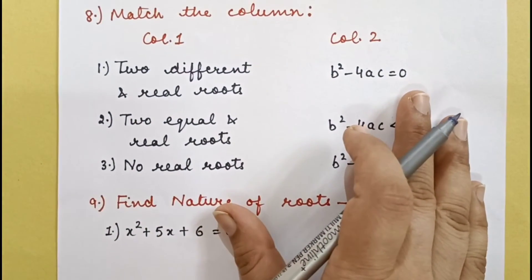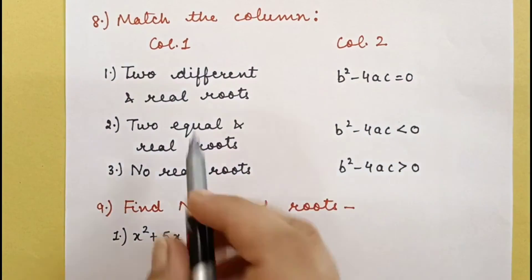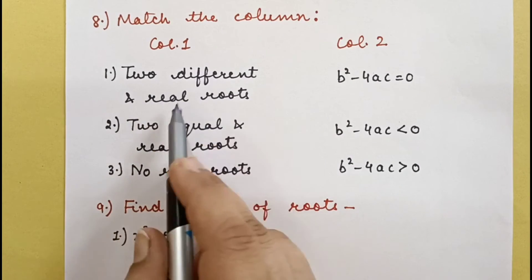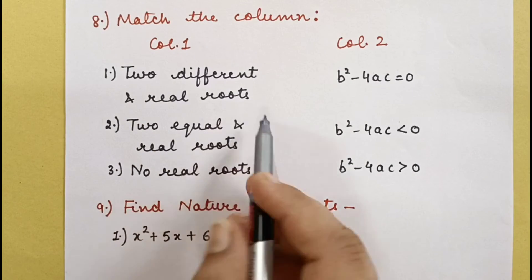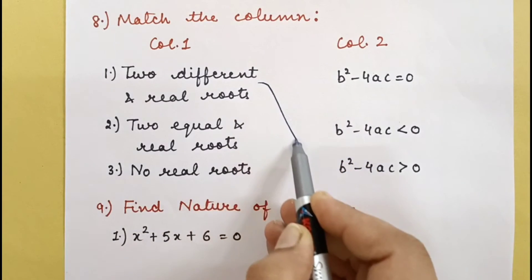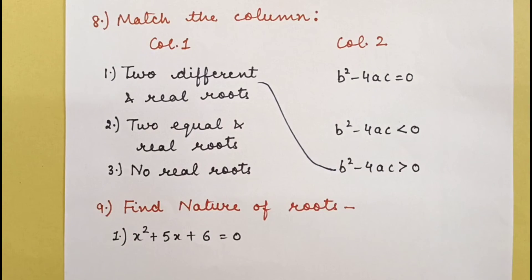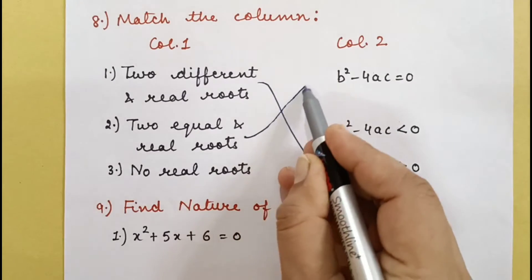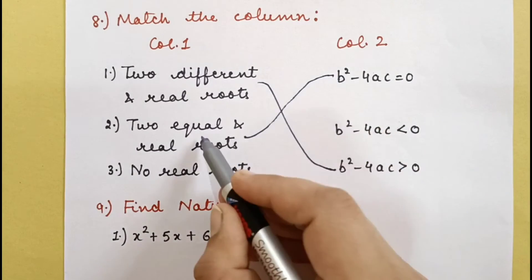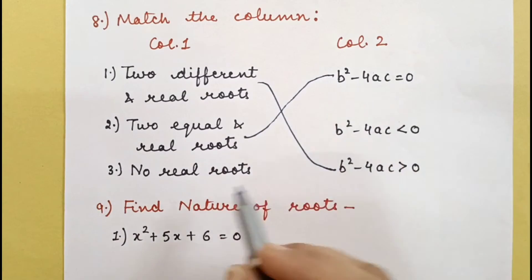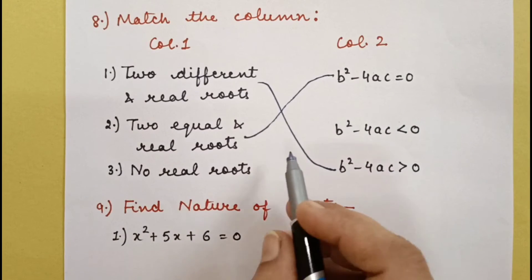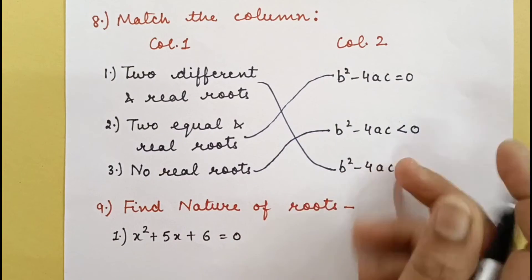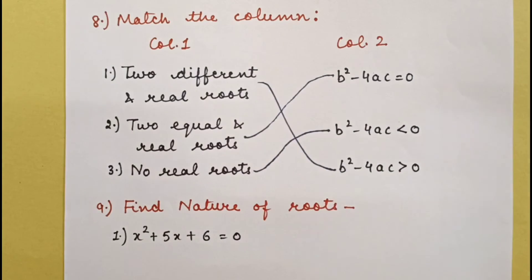Question 8 — match the column: Two different real roots when b² − 4ac > 0. Equal roots when b² − 4ac = 0 (remember: equal ↔ equal to 0). No real roots when b² − 4ac < 0.